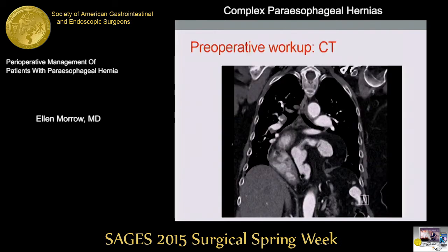CT scan is something that your patient is likely to have before you evaluate them, especially if they've been seen in an emergency department. It can provide a lot of helpful information about the anatomy of the hernia, especially as you can see in this case, which is a large type 4. CT is a good study to show you other organs that may be involved, such as the colon here.